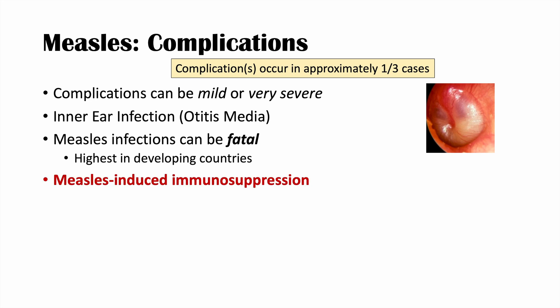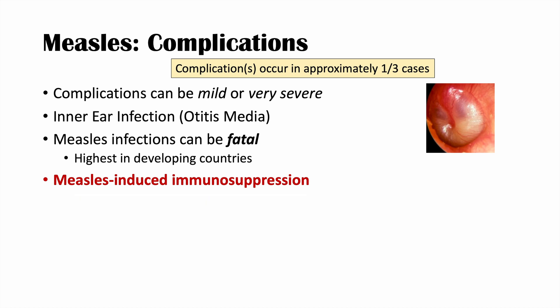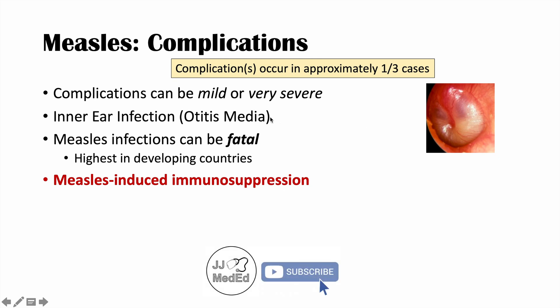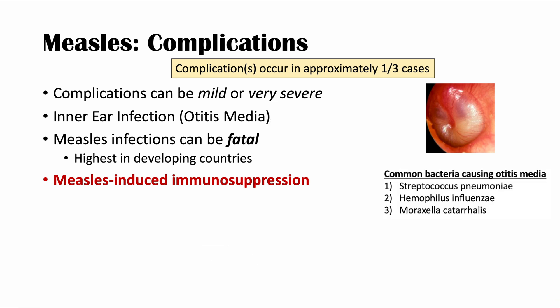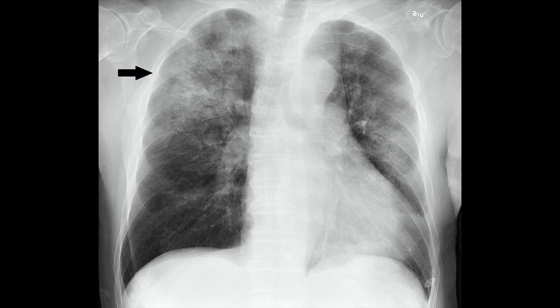One important factor tied to the fatality of measles is measles-induced immunosuppression. Being infected with measles can dampen and reduce your immune system function, increasing your risk for secondary infections like bacterial and viral infections. This is tied in with inner ear infections — the immunosuppression can lead to infections with bacteria like Streptococcus pneumoniae, Haemophilus influenzae, or Moraxella catarrhalis, causing inner ear infections. It can also lead to pneumonia.